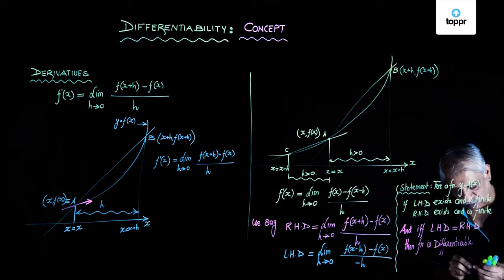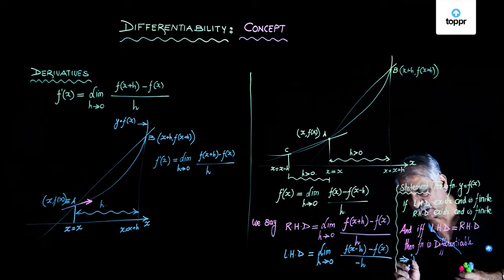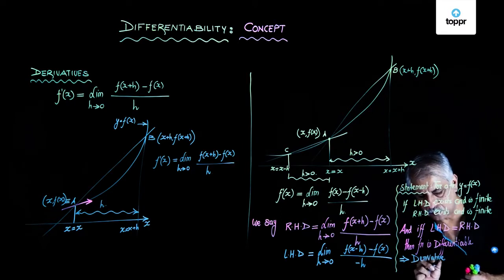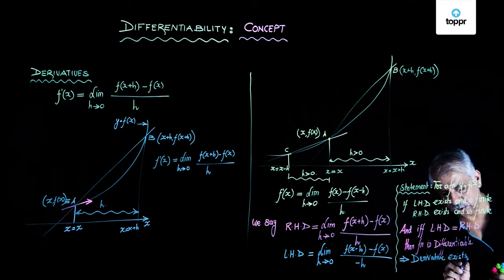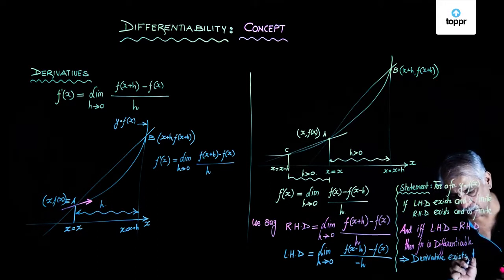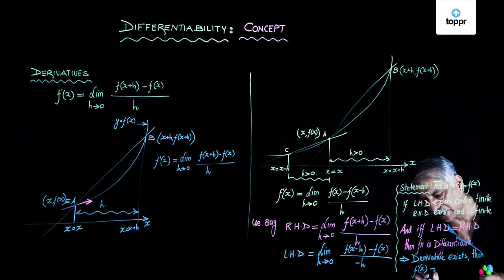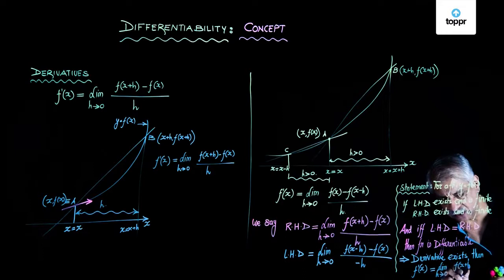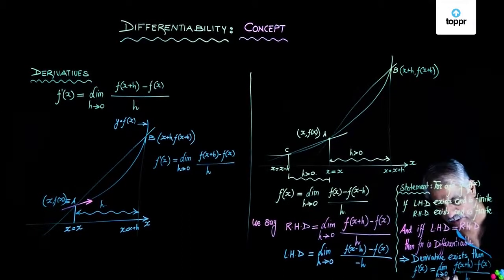What is the meaning of that? This implies that derivative exists, then f'(x) is given as limit as h tends to 0, f(x+h) - f(x) upon h.